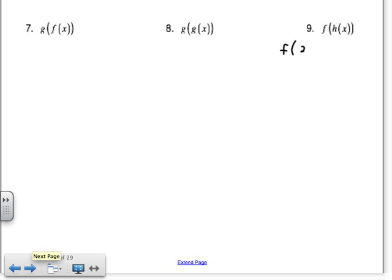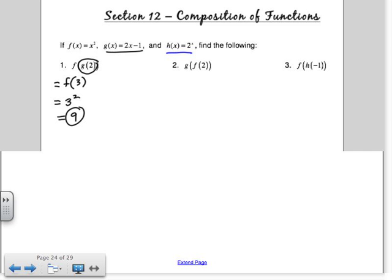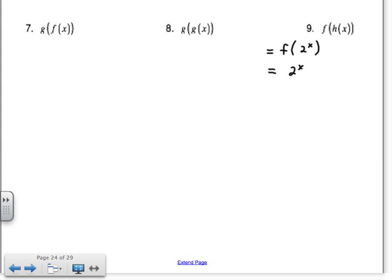Okay, same thing for the others. So if I have f of h of x. So h of x was 2 to the x. Okay, and then f was, go back, x squared.